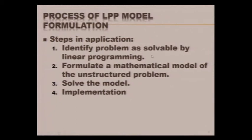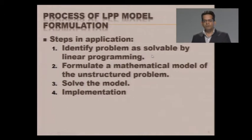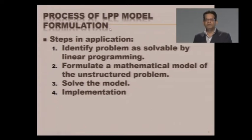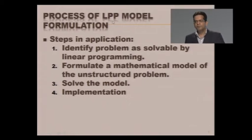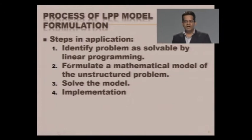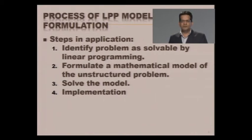The general process of LPP model formulation: Step one — identify the problem as solvable by LPP, i.e., determine whether the objective function and constraints can be formulated in linear format. Step two — formulate a mathematical model: construct the objective function, formulate the constraints, and add non-negativity restrictions. Step three — solve the model using methods like the graphical method or simplex method, or software.